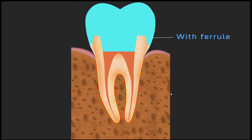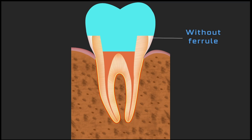Here we can see how the endocrown is going to look after its construction. You can see the internal preparation where the endocrown goes deep inside, along with the ferrule area circumferentially covering it. Even without the ferrule, there is a flat area at the finish line, and the internal area is covered by the endocrown.